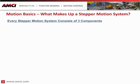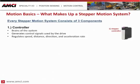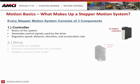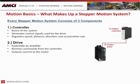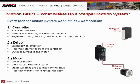Every stepper motion system consists of three components. First is the controller — the brains of the system. It generates control signals, typically digital pulses, that interface to the drive. Commands sent from the PLC allow it to regulate speed, distance, direction, and acceleration and deceleration of the motor. More sophisticated controllers have dedicated inputs for homing and registration. The drive is essentially an amplifier that receives commands from the controller and outputs current to the motor, and can be AC- or DC-powered. The third component is the motor, where current supplied by the drive generates a magnetic field within the stator, rotating the rotor and shaft.